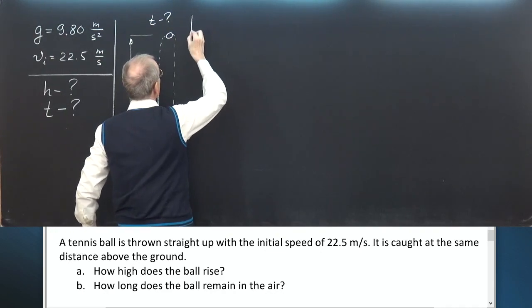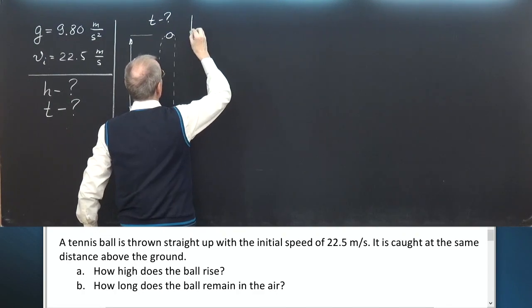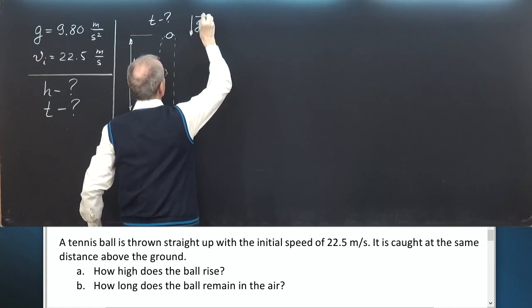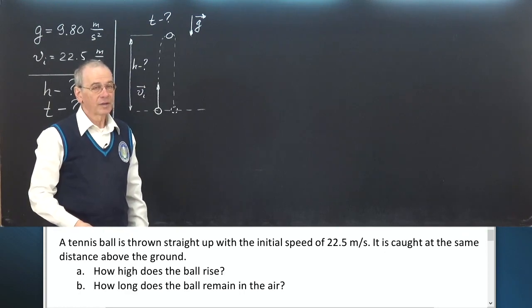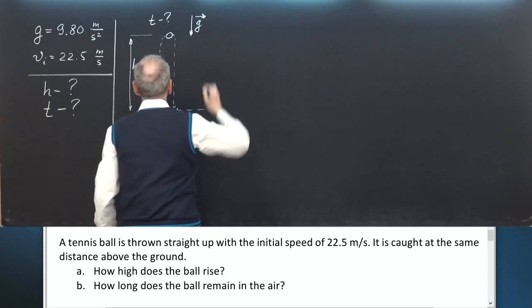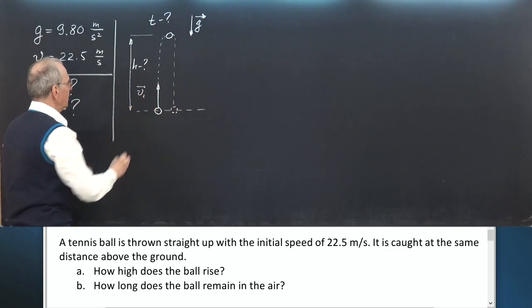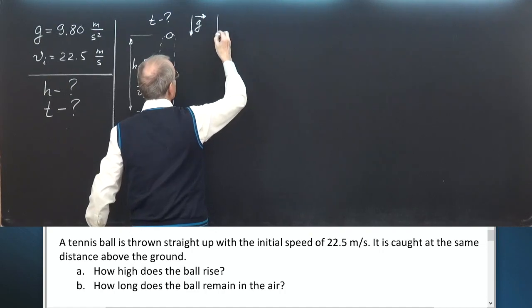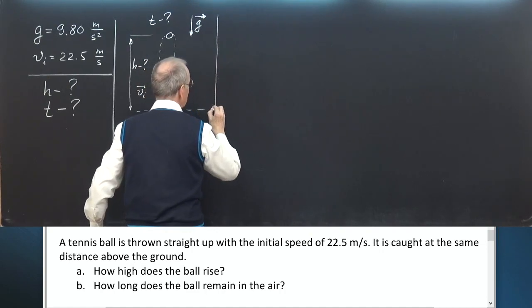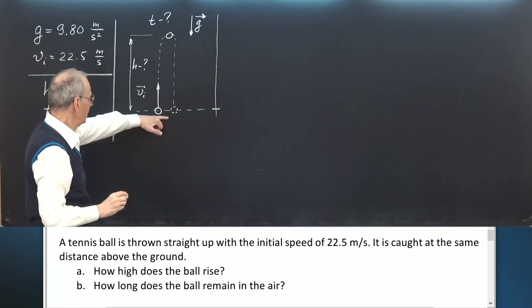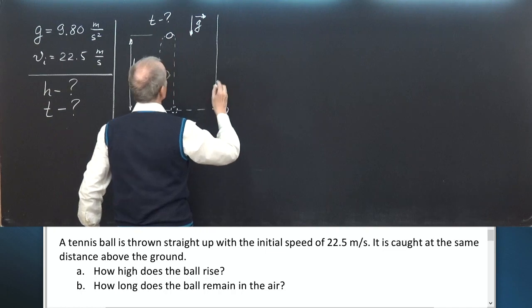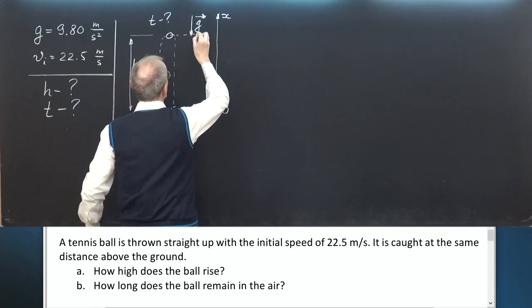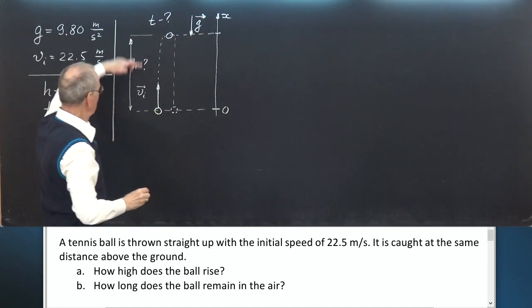This process takes T seconds for the ball to return. Acceleration G is 9.80 and directed downward. So let's use the coordinate system directed the same direction as initial velocity upward. The origin is at initial height 0, x-axis.